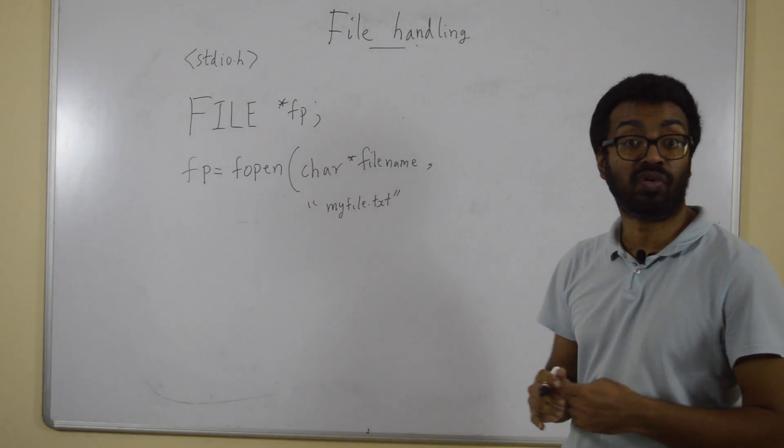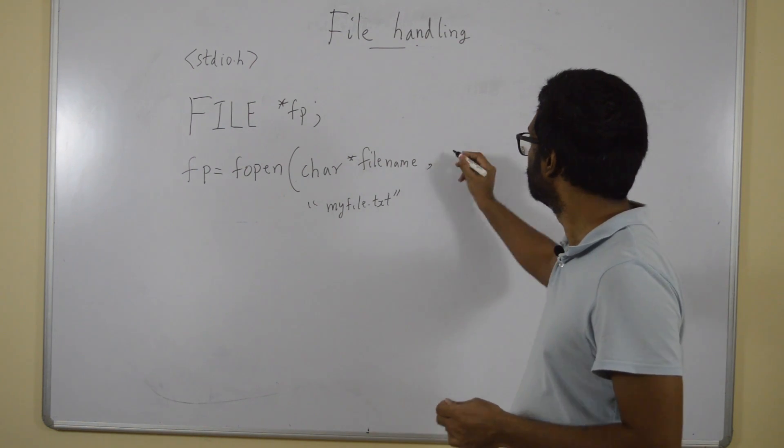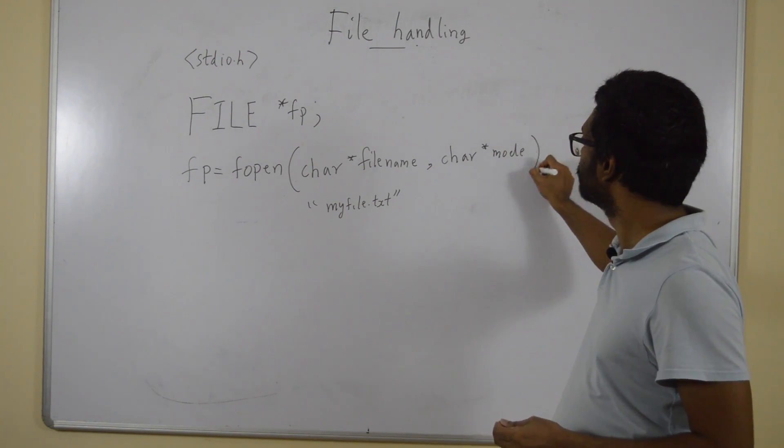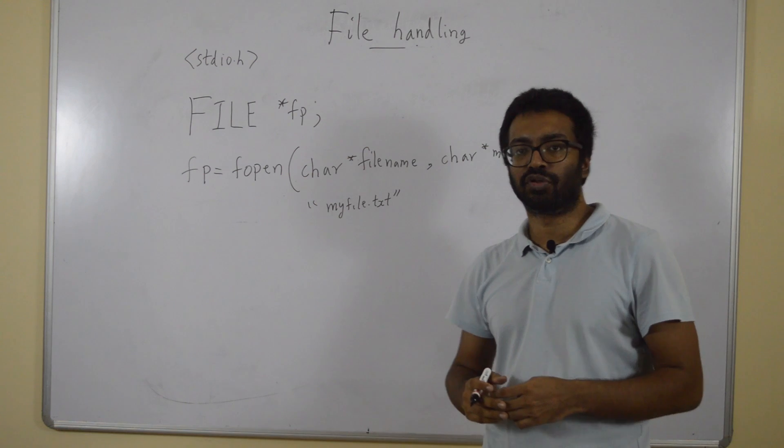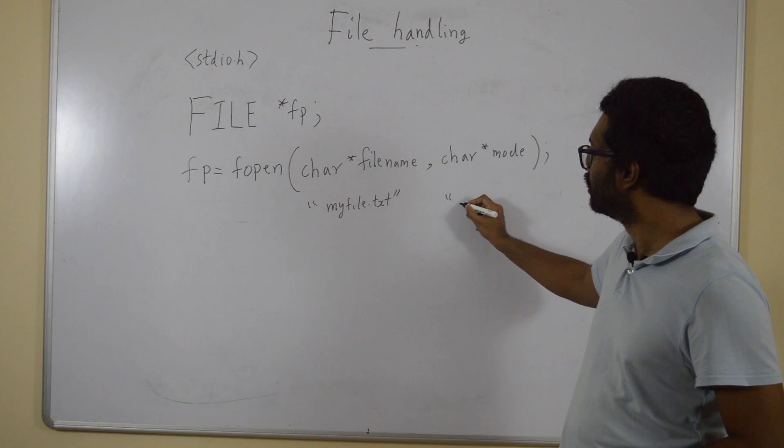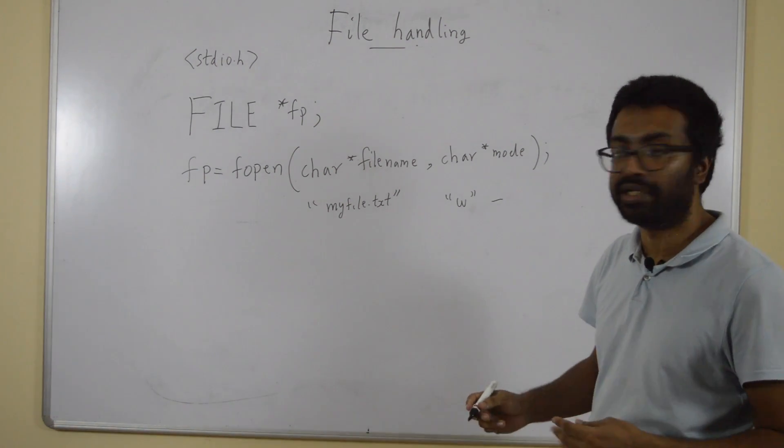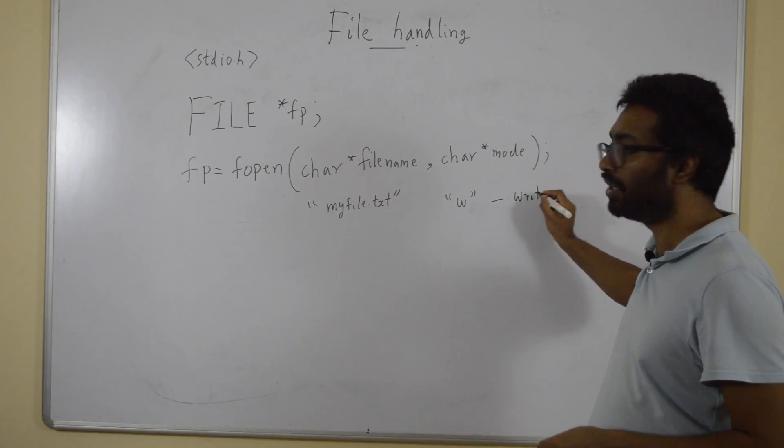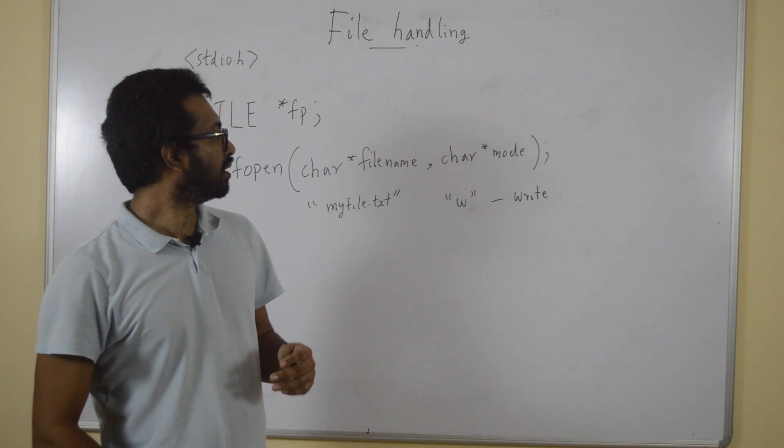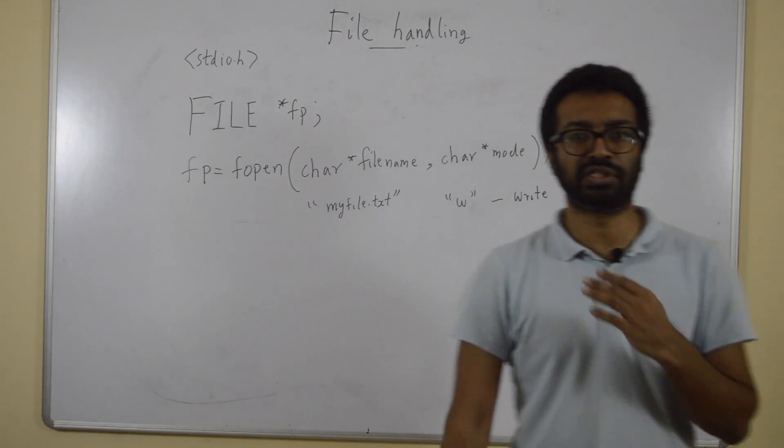The second parameter is for what purpose are you opening the file? Do you want to read, write or append? There are three things you can have. If you pass W, it means I want to write into the file. If you open in this mode, if the file does not exist, it will create a new file. On the other hand, if the file already exists, it's going to rewrite the entire file.